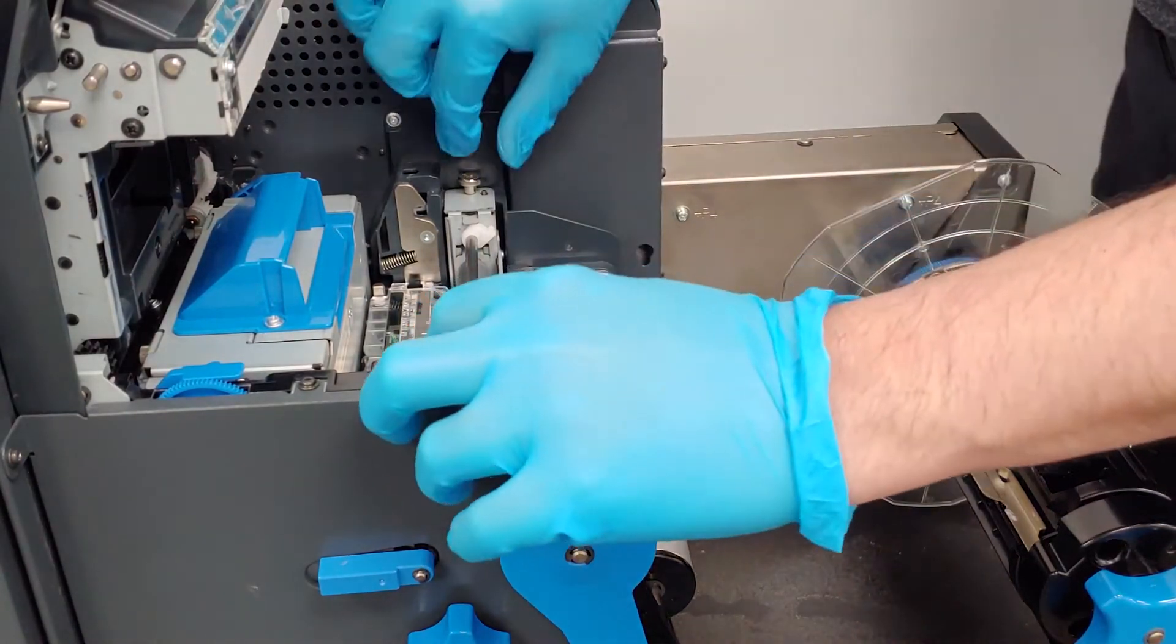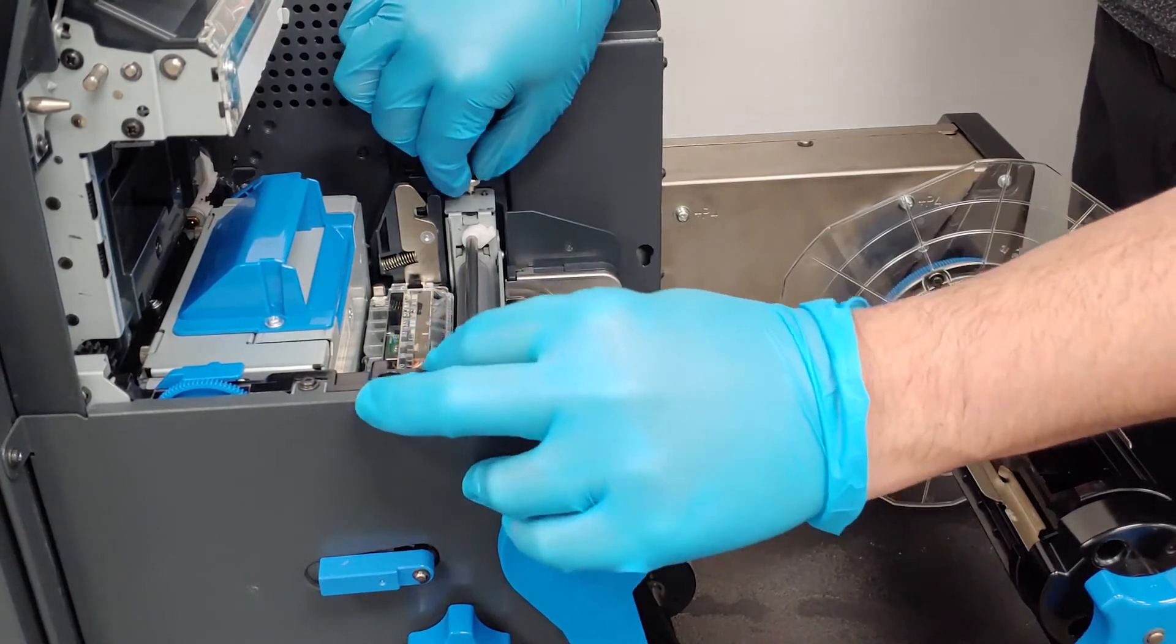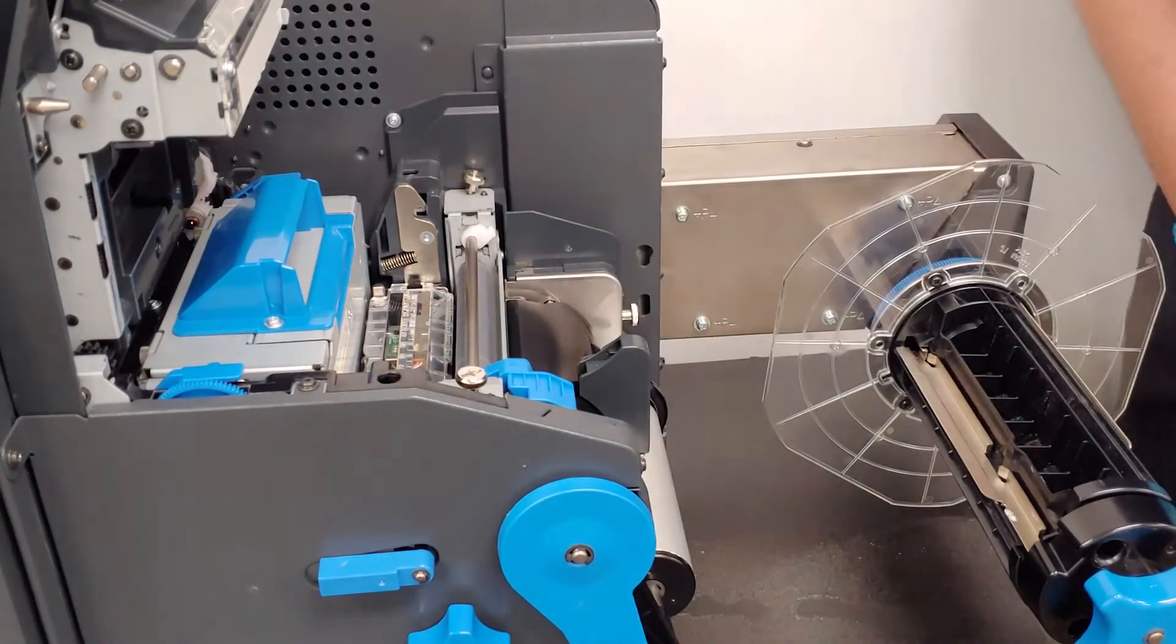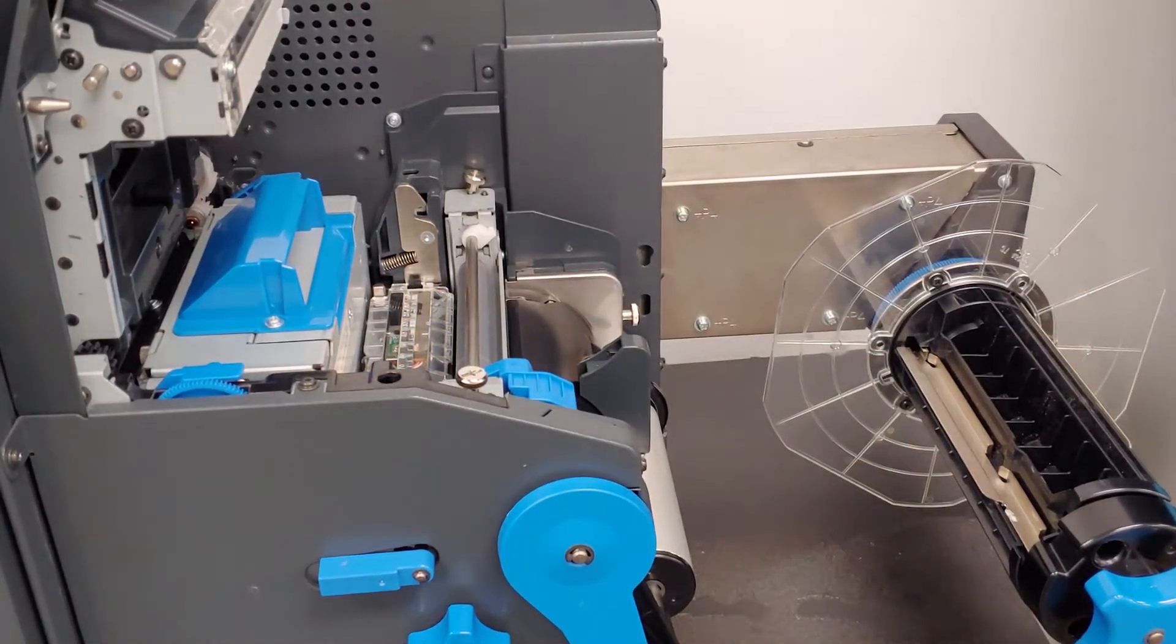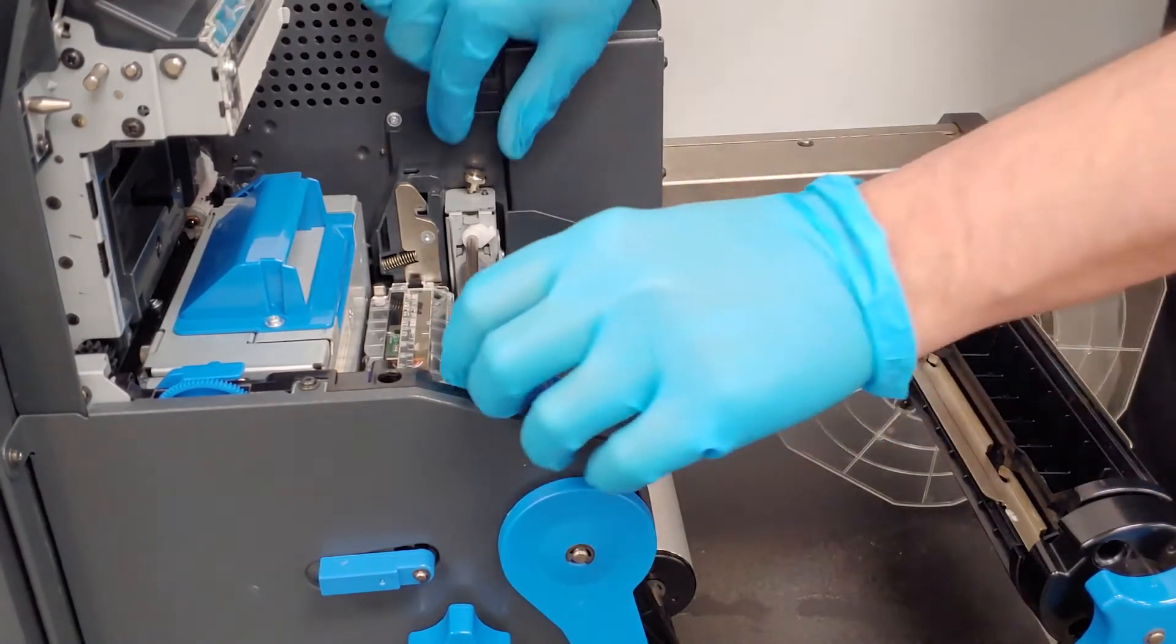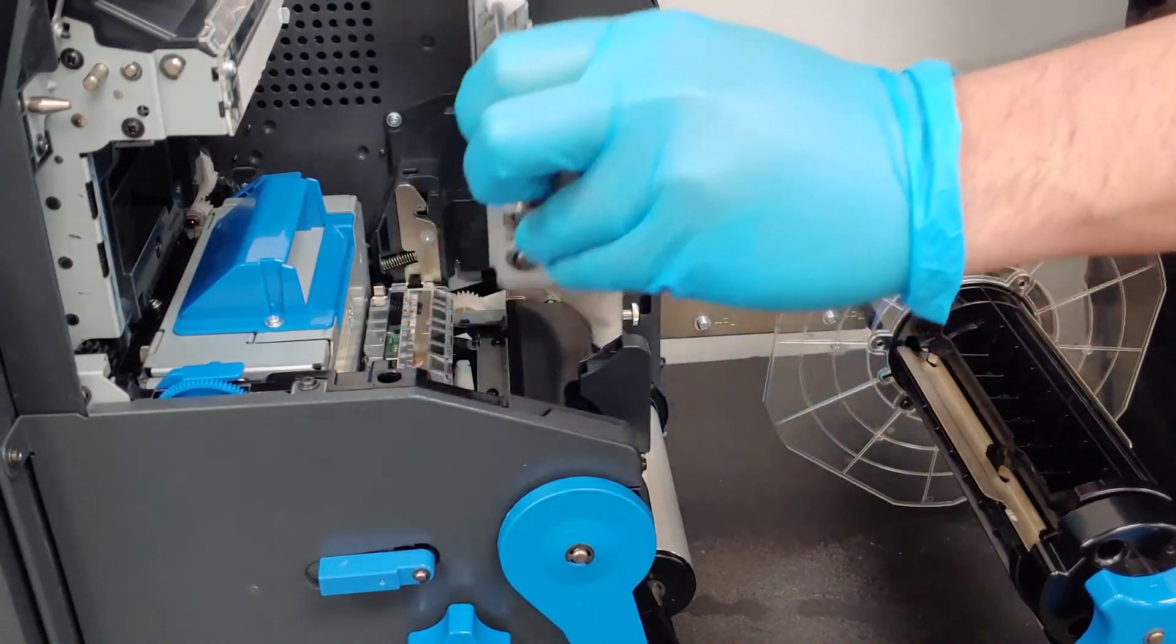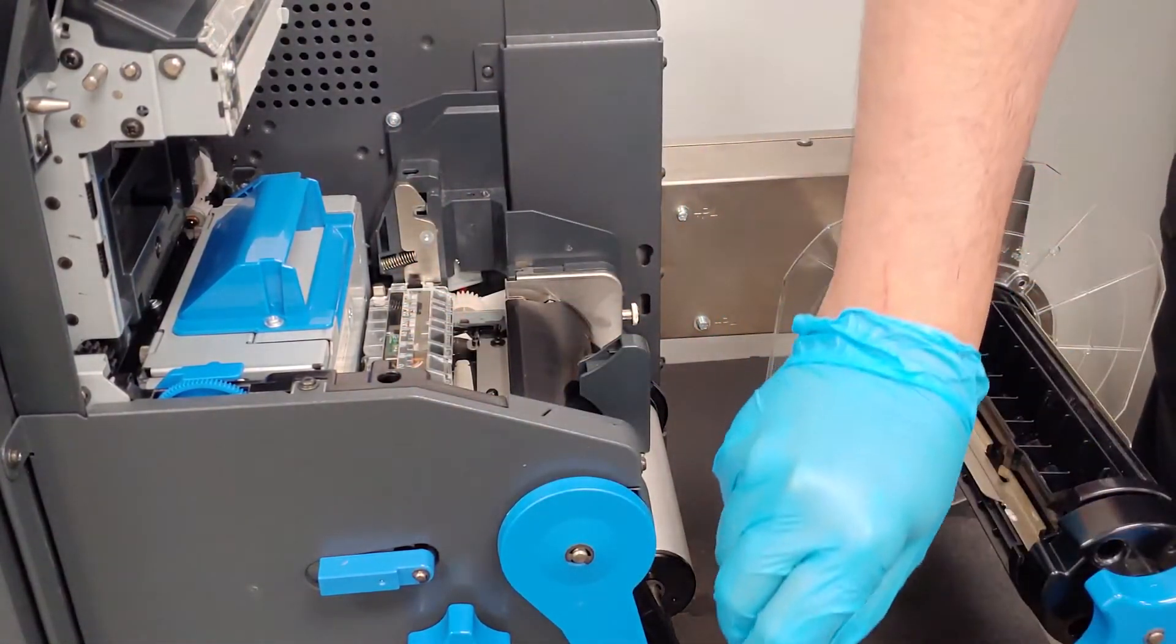Loosen the retaining screws on top of the roller assembly by turning them counter-clockwise until they are free from the unit. Use a screwdriver if necessary. The screws are kept captive to keep them on the assembly so they cannot be lost. Lift the roller assembly out of the unwind unit and set it down on your work surface.